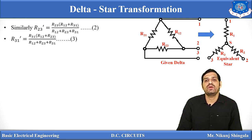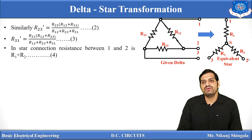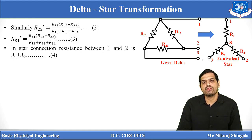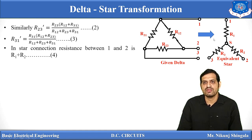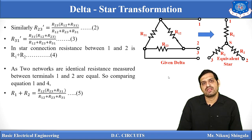These are equations 1, 2, and 3. As both networks are identical, the resistance between terminals 1 and 2 in the star equals that in the delta. In the star, with terminal 3 open, resistance between 1 and 2 is R1 + R2. So we can write: R1 + R2 = R12·(R23+R31)/(R12+R23+R31), which is equation 5.